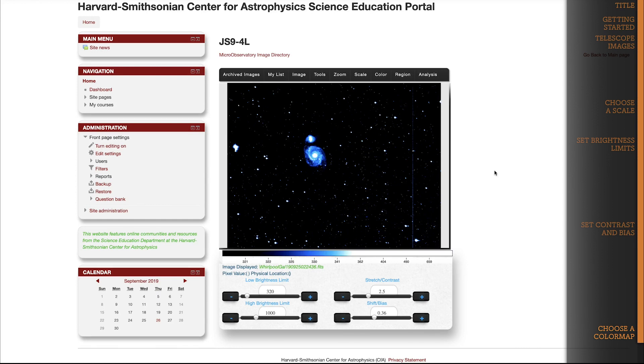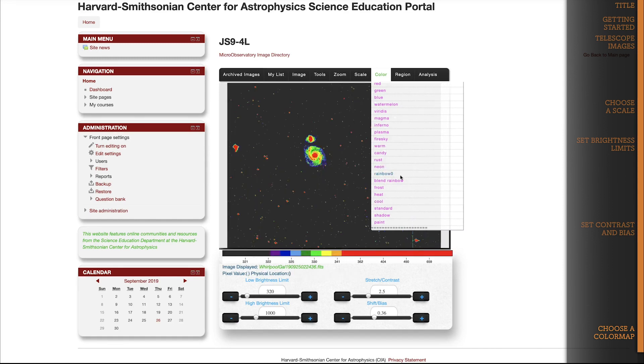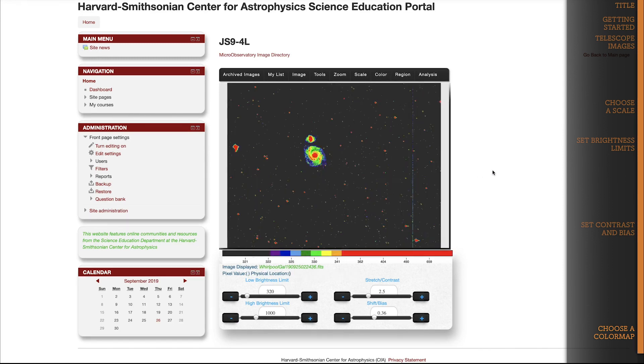Just remember that the brightness limits, contrast, and bias sliders will work exactly the same as they did before. It's just that now you are stretching, shifting, and adjusting a color scale instead of a black and white scale. With rainbow, for example, the lower pixel values get set to black and purple, and the higher pixel values get set to red and orange. Play around with them and see how they change the details of your image.